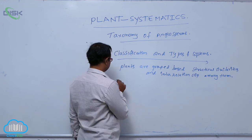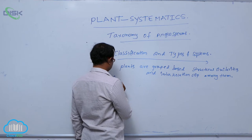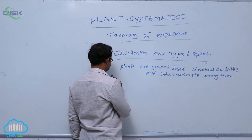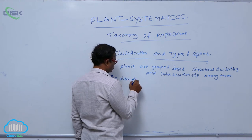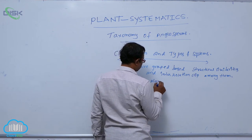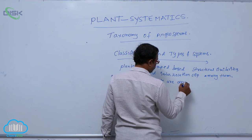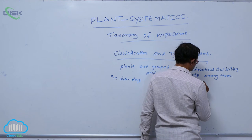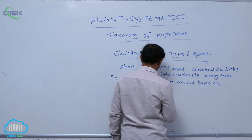The first type of classification: in ancient times, in olden days, plants were divided based on economic uses.